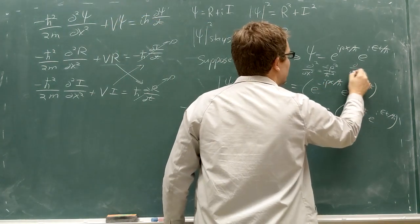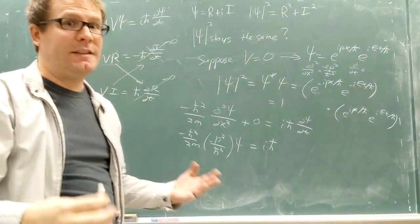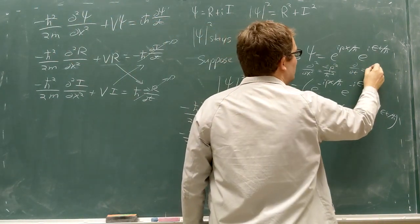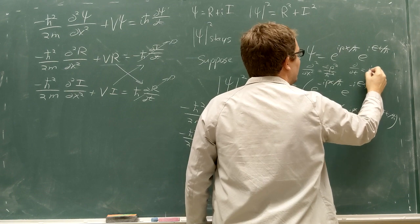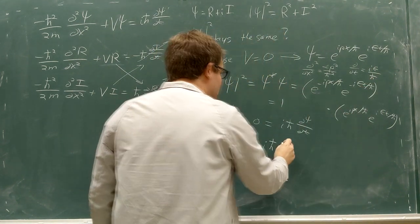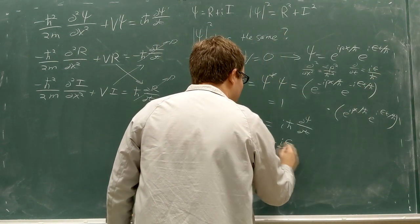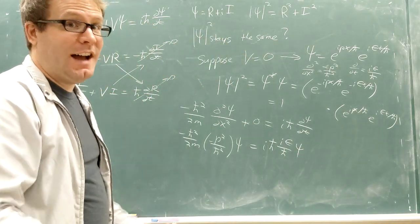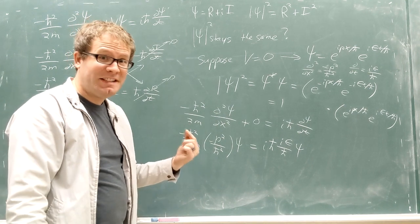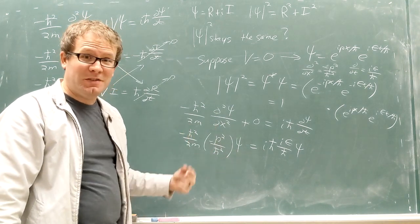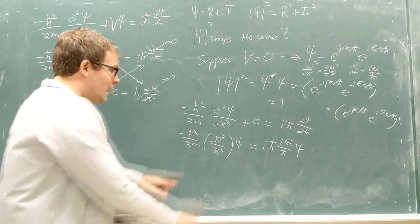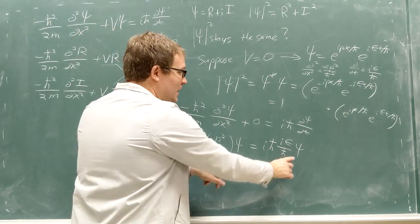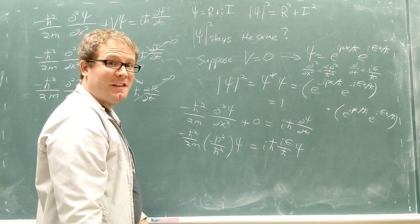going to equal i h-bar. Now I need to take d psi dt, taking the derivative with respect to time. Again, derivative of exponentials is the easiest thing in the world. Leave the exponential alone, and we're just going to be multiplying by i e over h-bar. So I'll have an i e over h-bar times my original psi. Because the psi, the exponentials don't change. I just spit out constants. I can take derivatives of exponentials all day long. This part's interesting. Because I get back the same wave function. That's interesting.